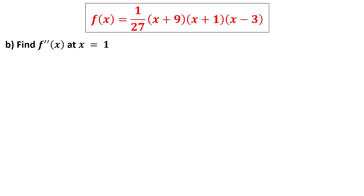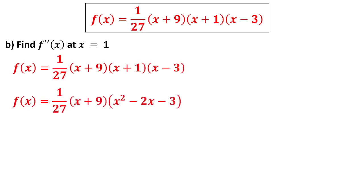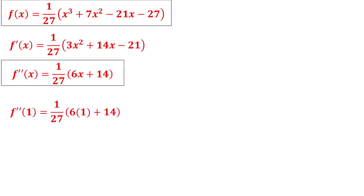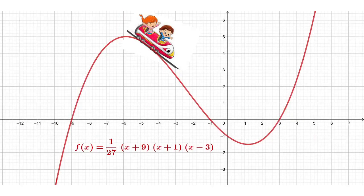Second question: Find f double dash of x at x equals 1. For that I have to simplify this f(x) to avoid the product rule. Expanding, I am getting a cubic polynomial. Finding f double dash of x and putting x equals 1, the answer is 20/27. I am showing you the roller coaster how it moves in the curve. This problem can also ask where it attains the maximum or minimum by second derivative test.